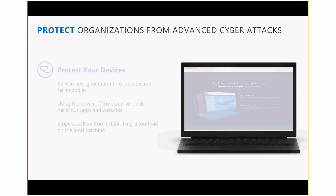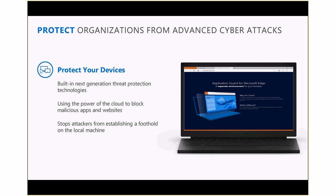That leads us to the device protection vector. We have a very comprehensive set of capabilities at the device protection level. Windows Defender Antivirus protects against advanced malware and traditional virus attacks, but is much more advanced than traditional antivirus solutions because it leverages the power of the intelligence security graph. Then we have the SmartScreen filter in Windows 10, which gives you protection against phishing attacks and malware attacks perpetrated through the browser — a very powerful capability to stop attacks being disseminated through the browser channel.